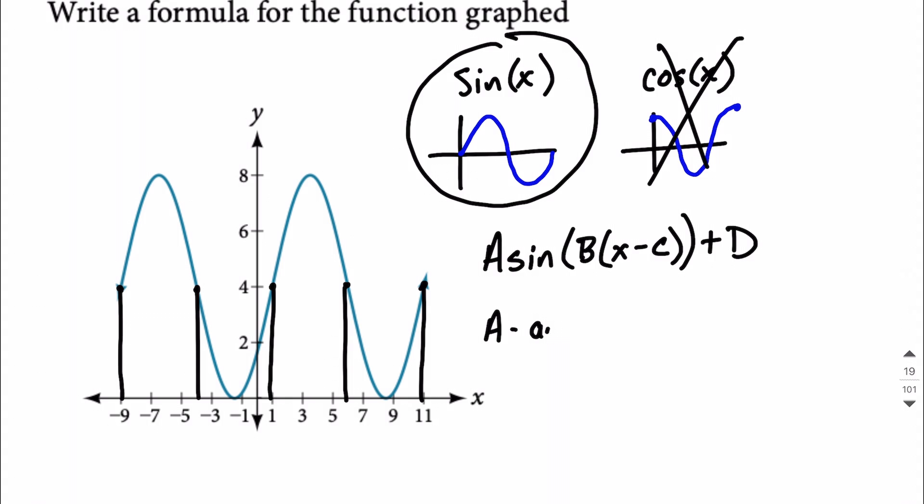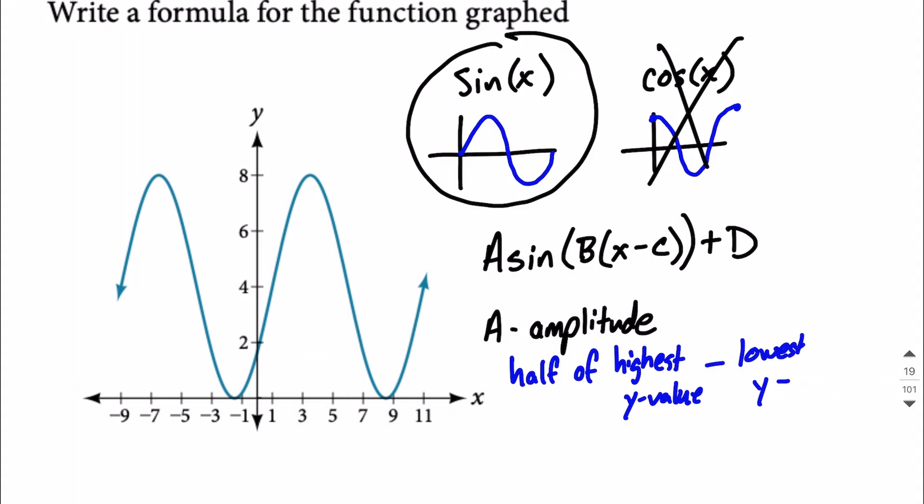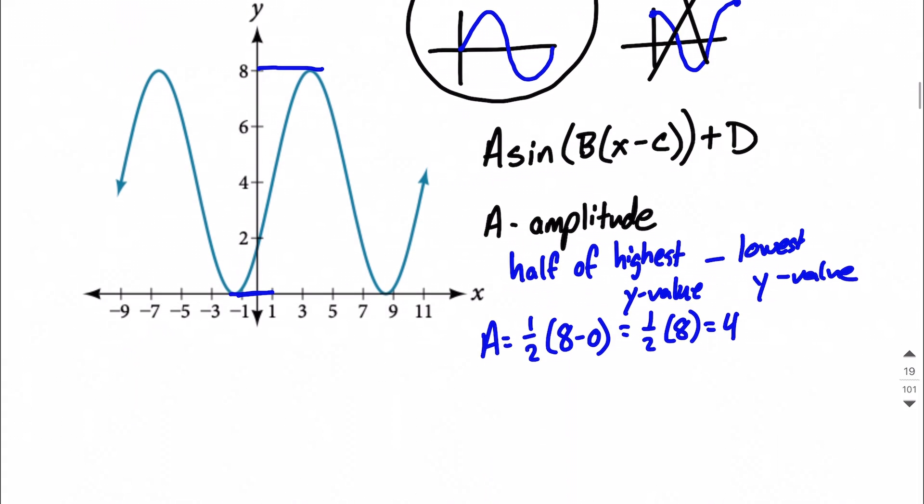A, what you want to think of this as meaning is it has to do with the amplitude of our graph. Basically meaning from top to bottom exactly how high do we go and it works out to be half of that. So I'm going to write it out as this. We're going to have half of the highest y value minus the lowest y value. The highest y value looks to be up here at eight. The lowest y value looks to be down here at zero. So we're going to do one half of eight minus zero which is half of eight which works out to be four and that's our value for A. So kind of filling in as we go we start out and we have four times sine of B x minus C with a plus D hanging out here at the end.